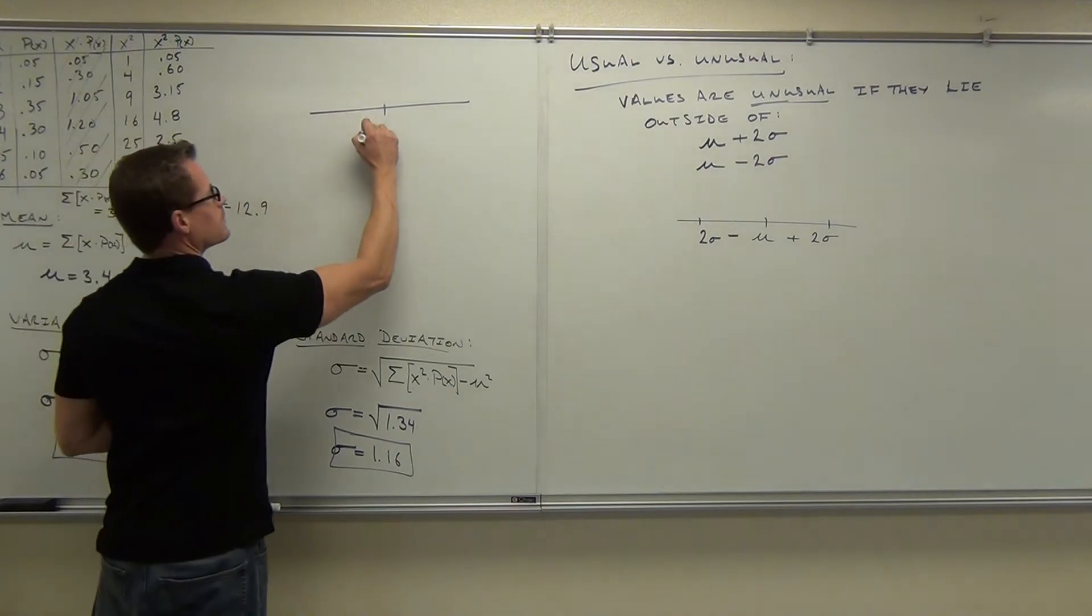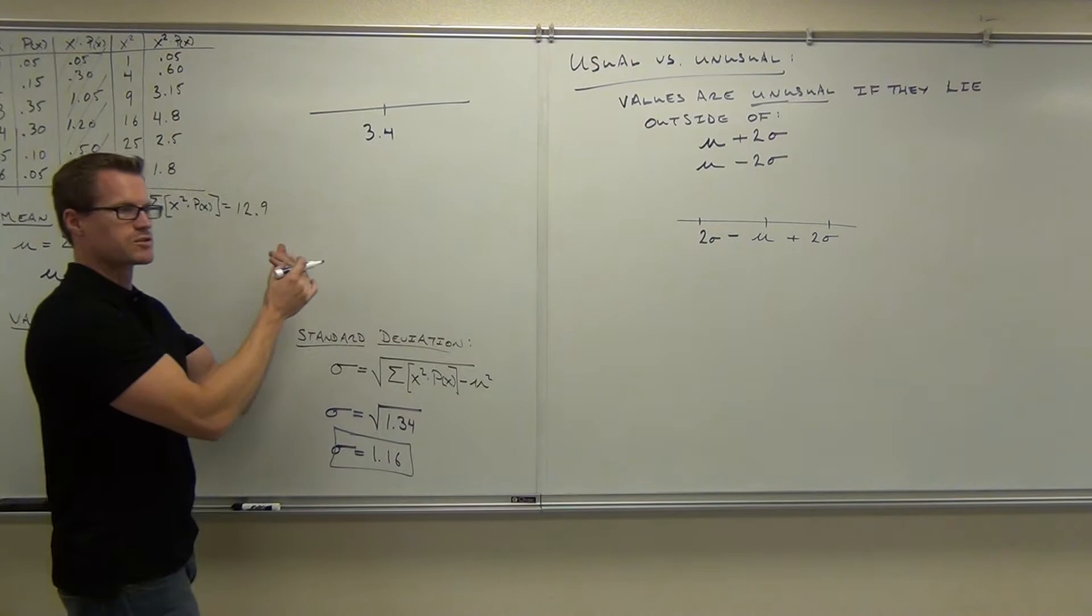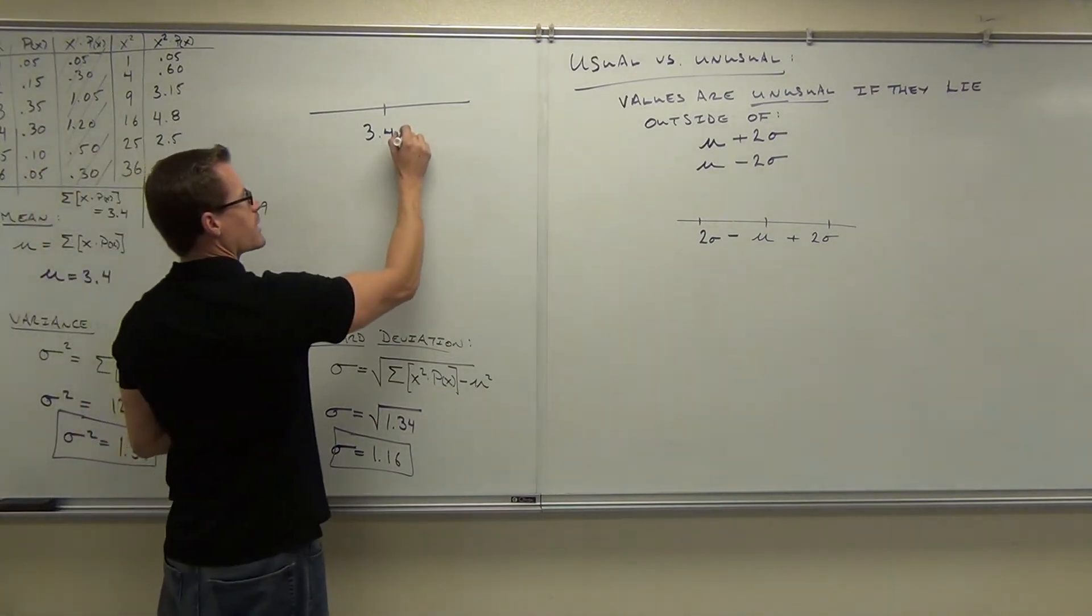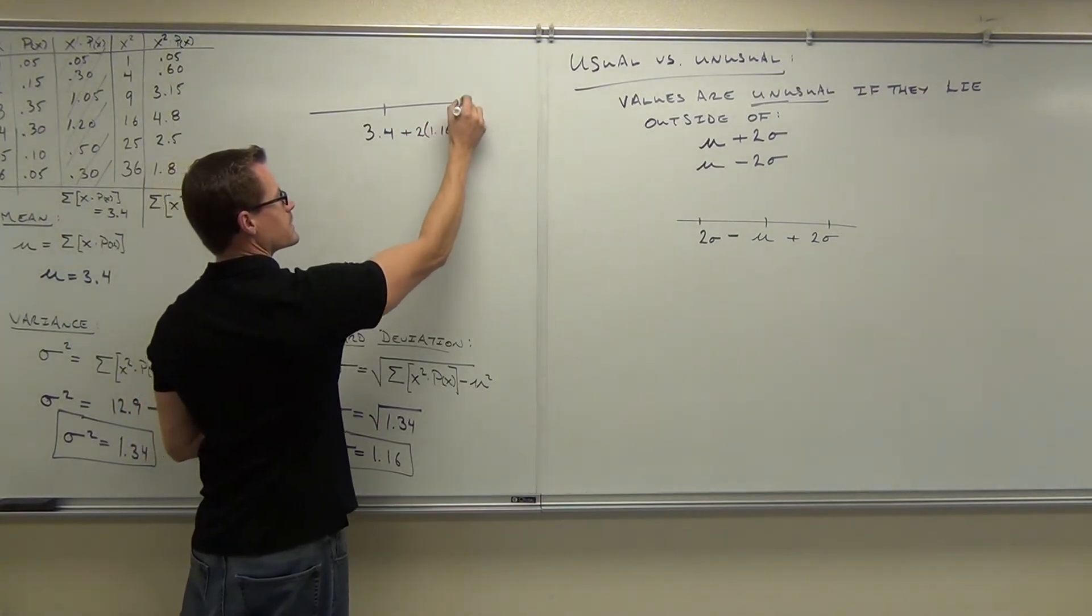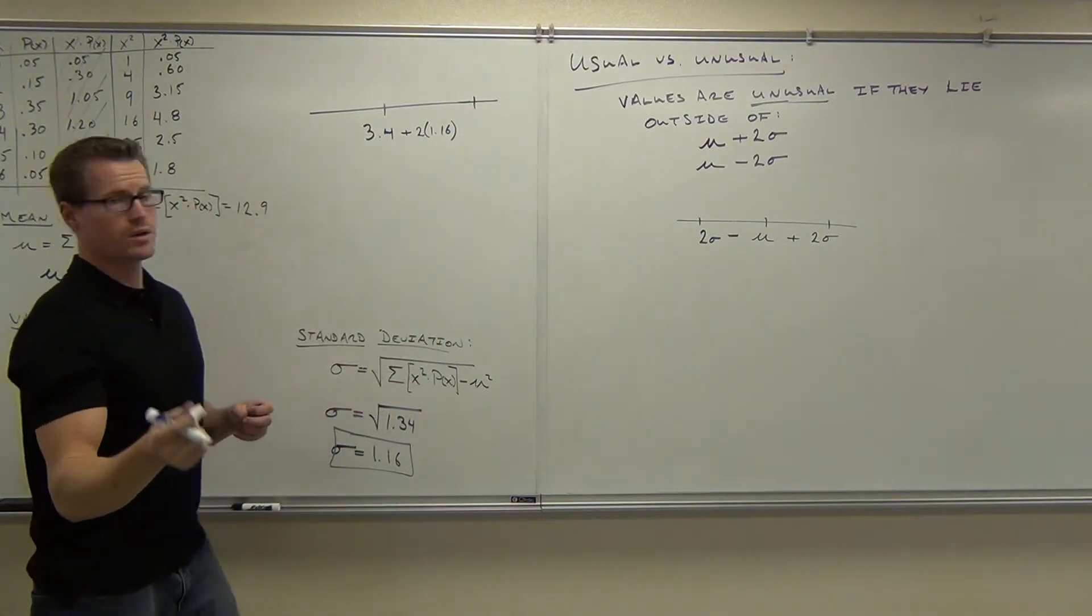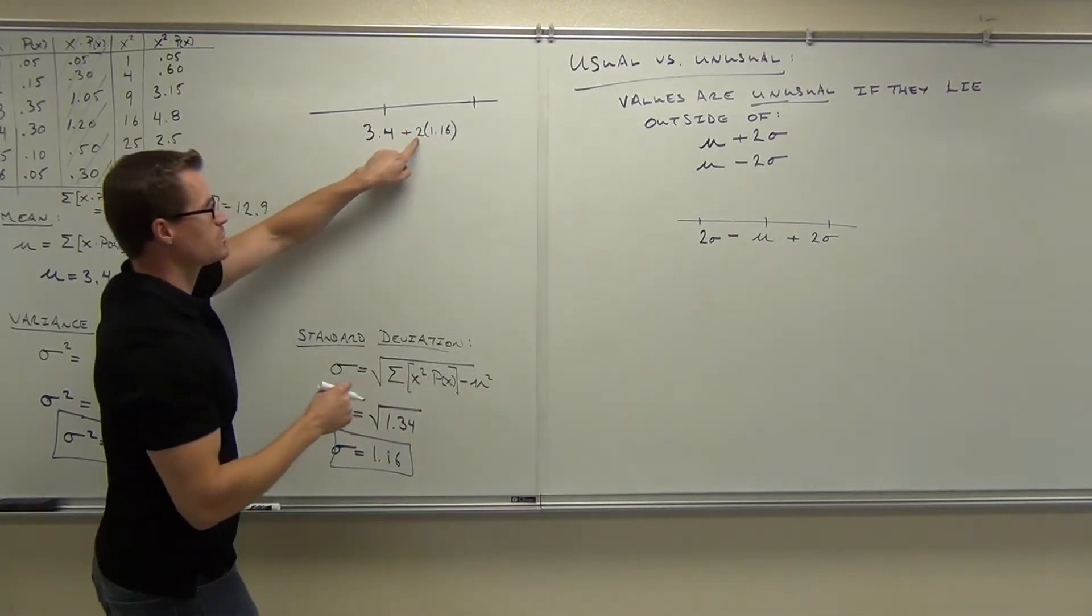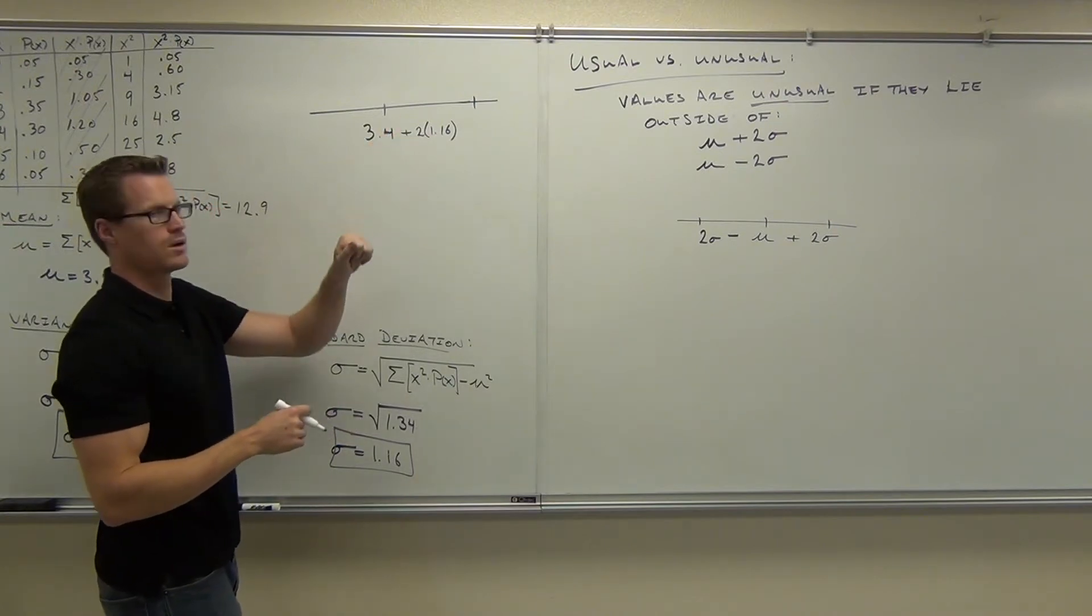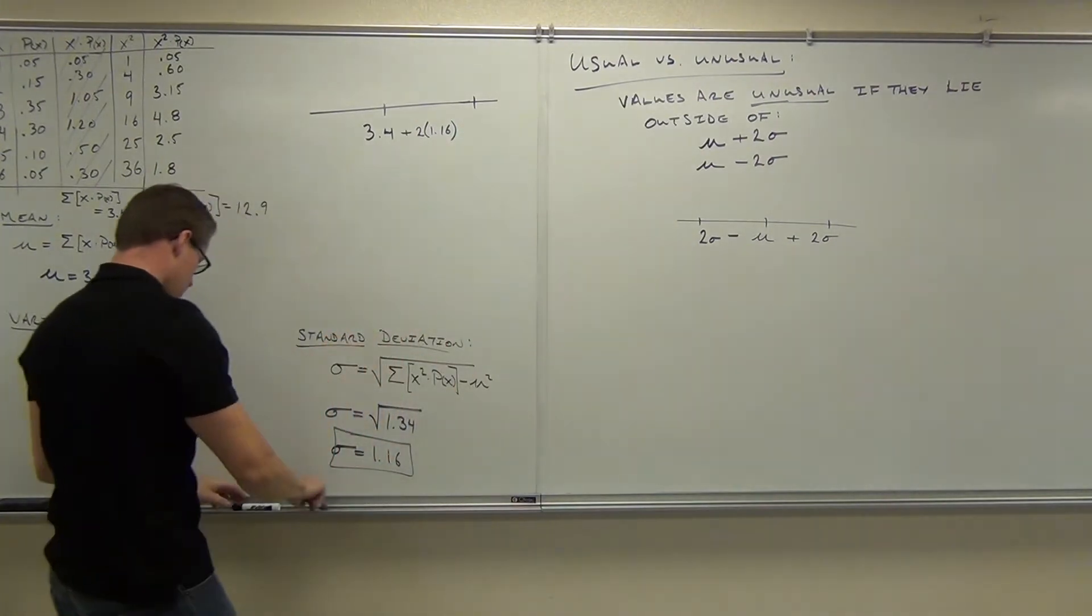What's my mean? 3.11. I want to add two standard deviations to the right and subtract two standard deviations from the left. What is my standard deviation? 1.16. So I want to add two times 1.16. So I'm adding 2.32. If I add 2.32, so notice that where we're getting 2.32, that's two times 1.16. Add that on to the 3.4. How much do you get? Grace, say that one more time for me. 5.72.